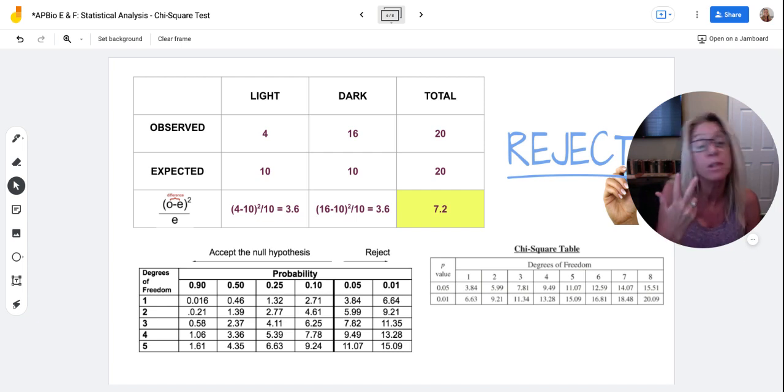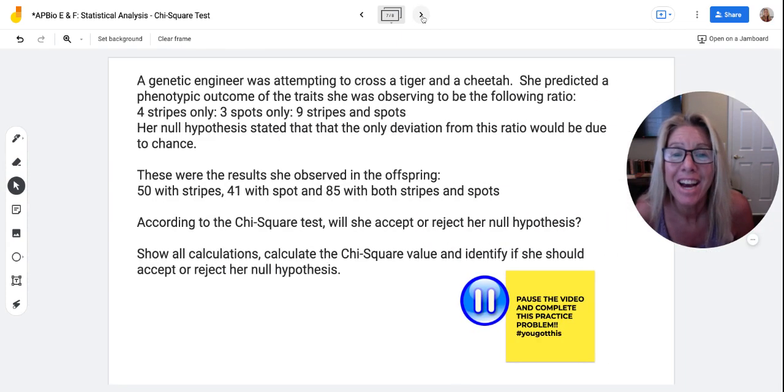Well, we have three choices. We have spots, stripes, and spots with stripes. So how many degrees of freedom do we have? We're going to have two. These were the results she observed in the offspring.